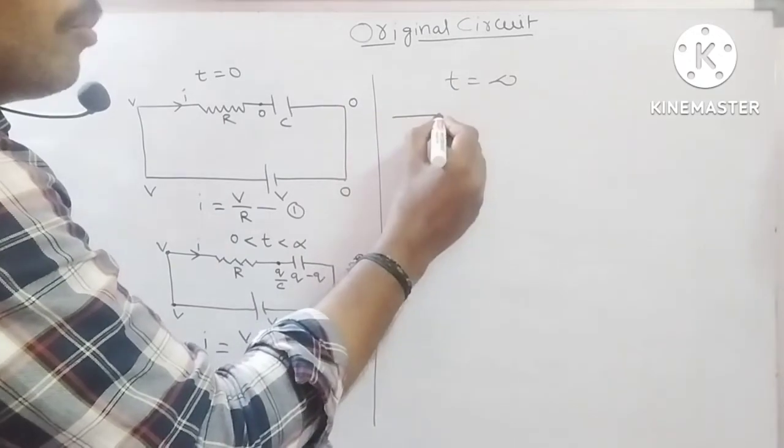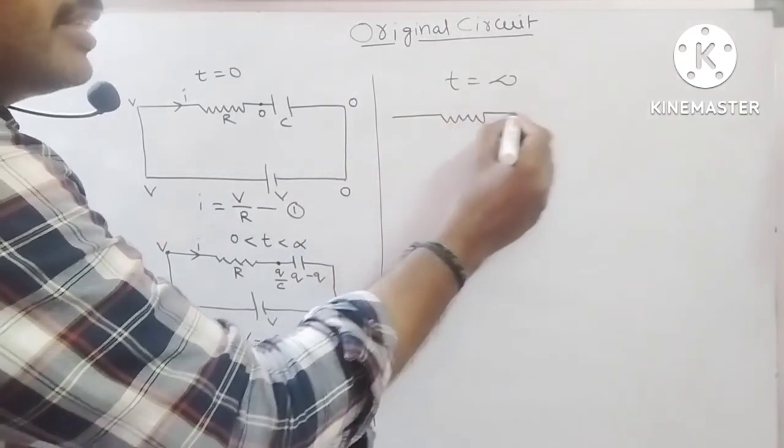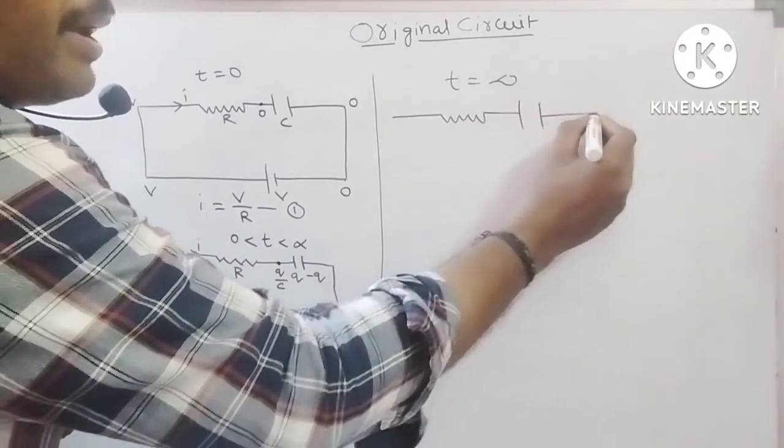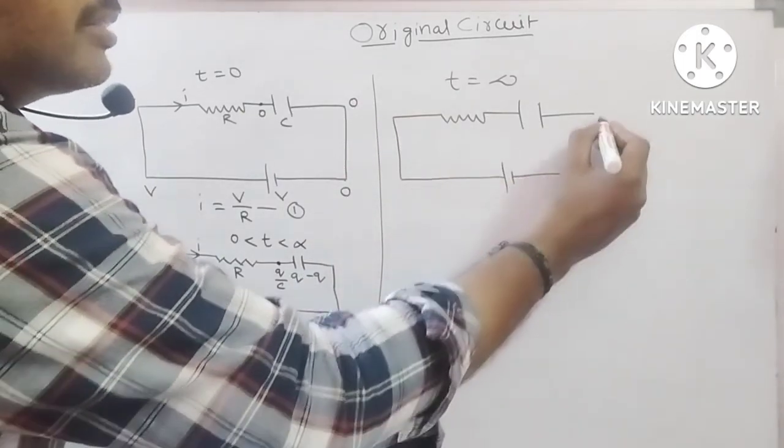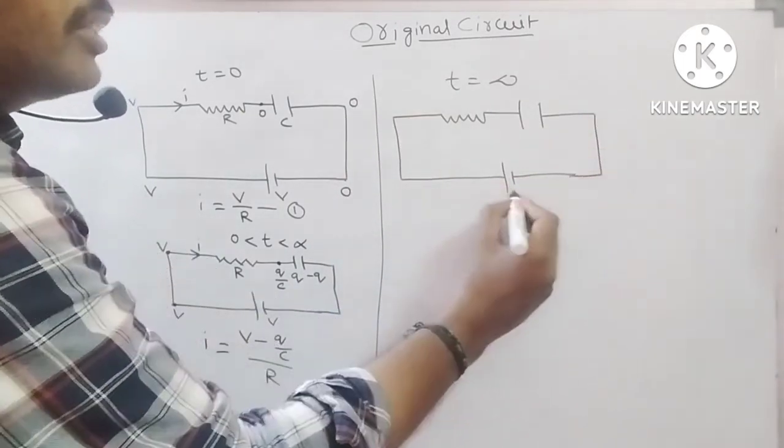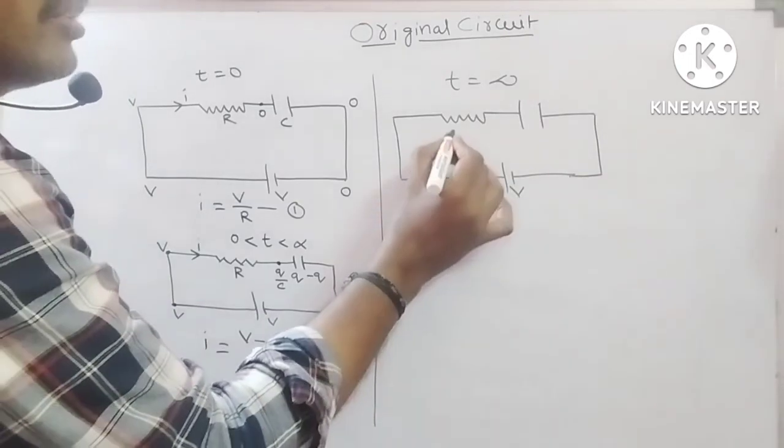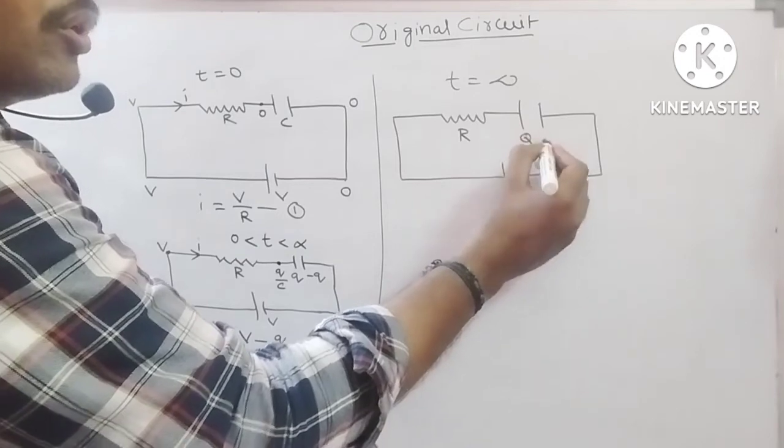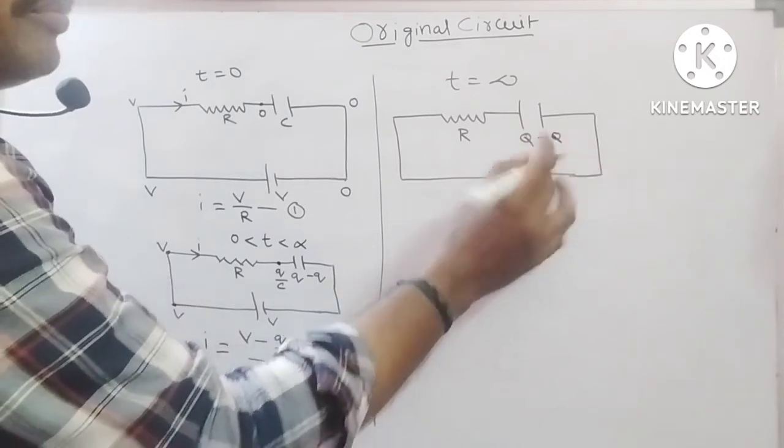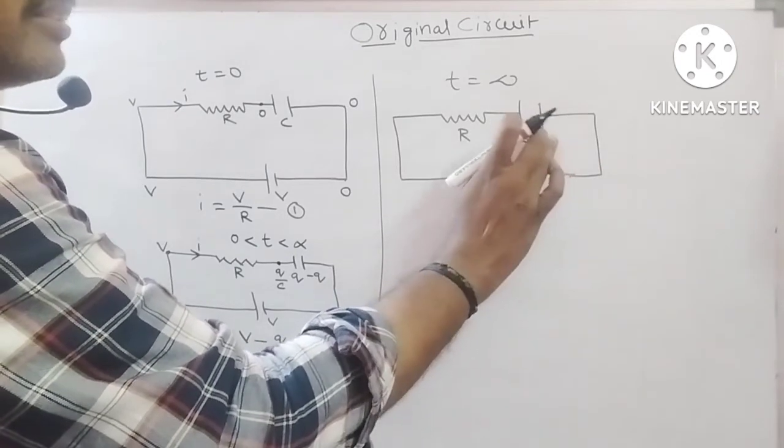I can also show you the last part of this circuit. This is the resistance, this is the capacitor and battery has potential difference V. So, here resistance R, fully stored charge Q, here minus Q, minus Q.